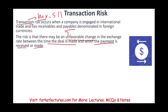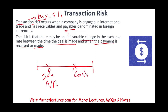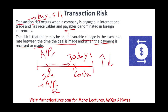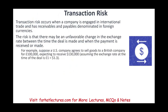Here's what happens: when you have a receivable, you make a sale and have an AR, but you won't receive the cash until maybe 30 or 60 days later. By then, you could have more or less of your local currency because the fluctuation could go for you or against you. Same concept with accounts payable — you're going to make a payment later and might pay more or less. That's the currency transaction risk.